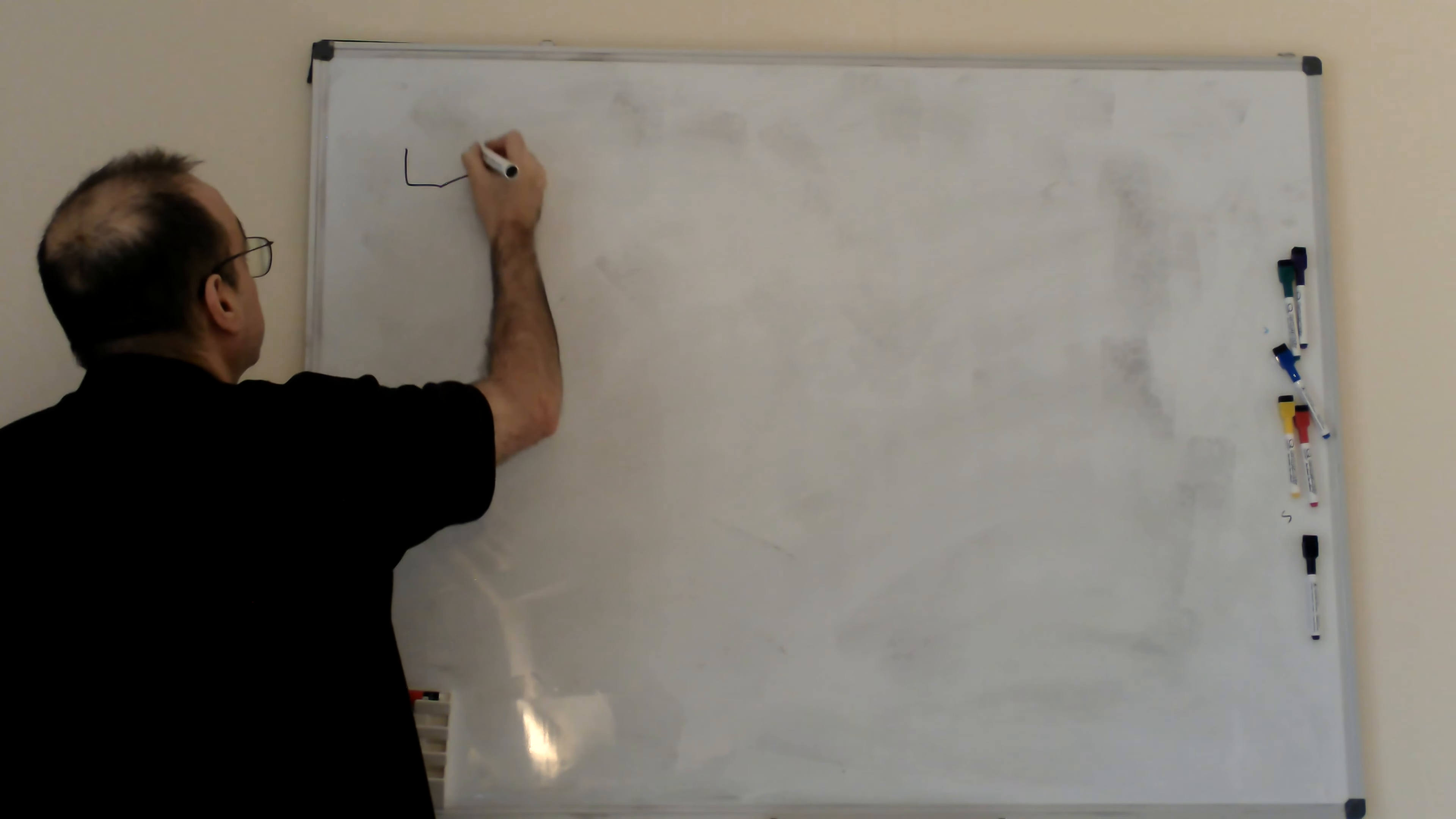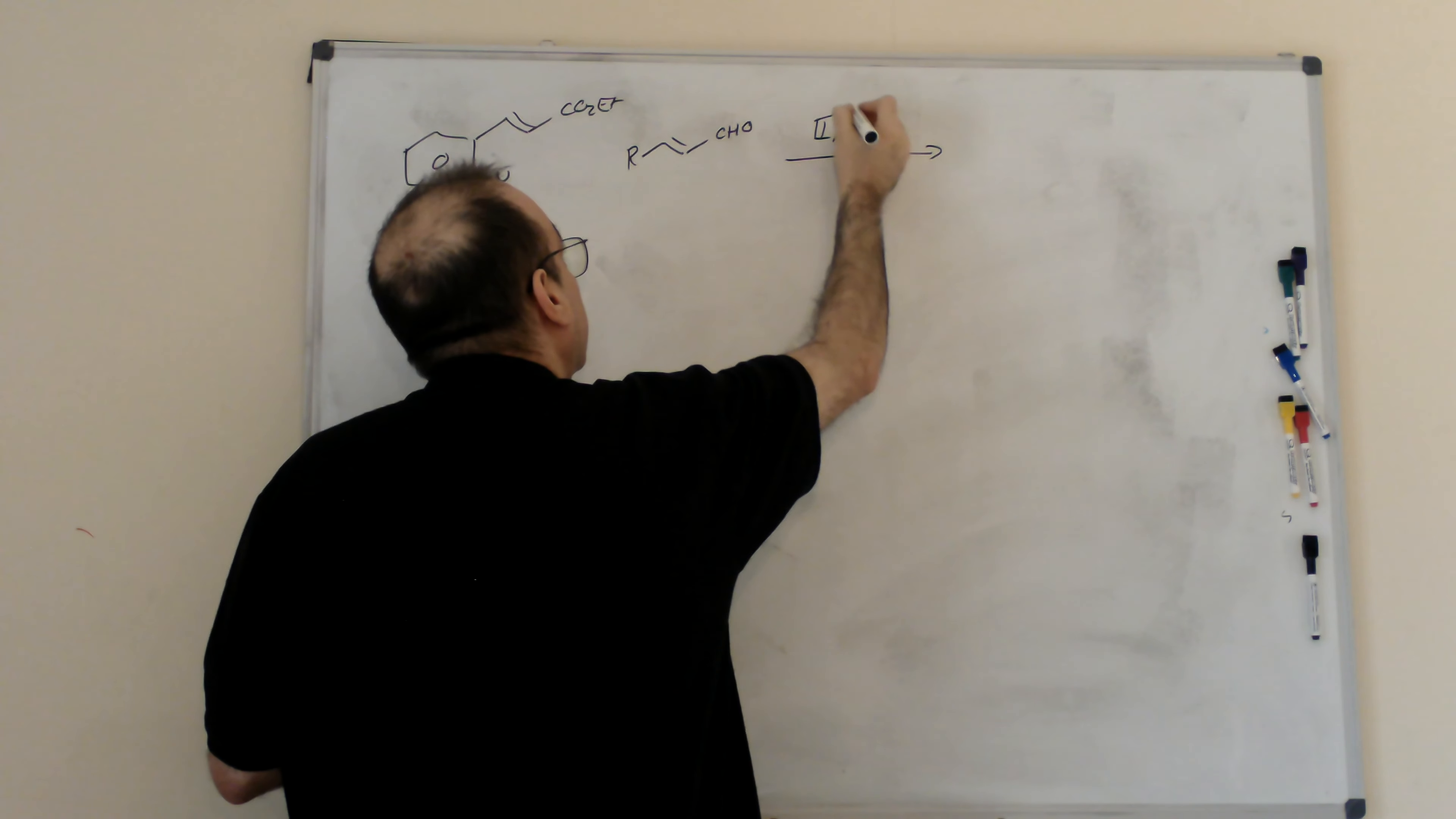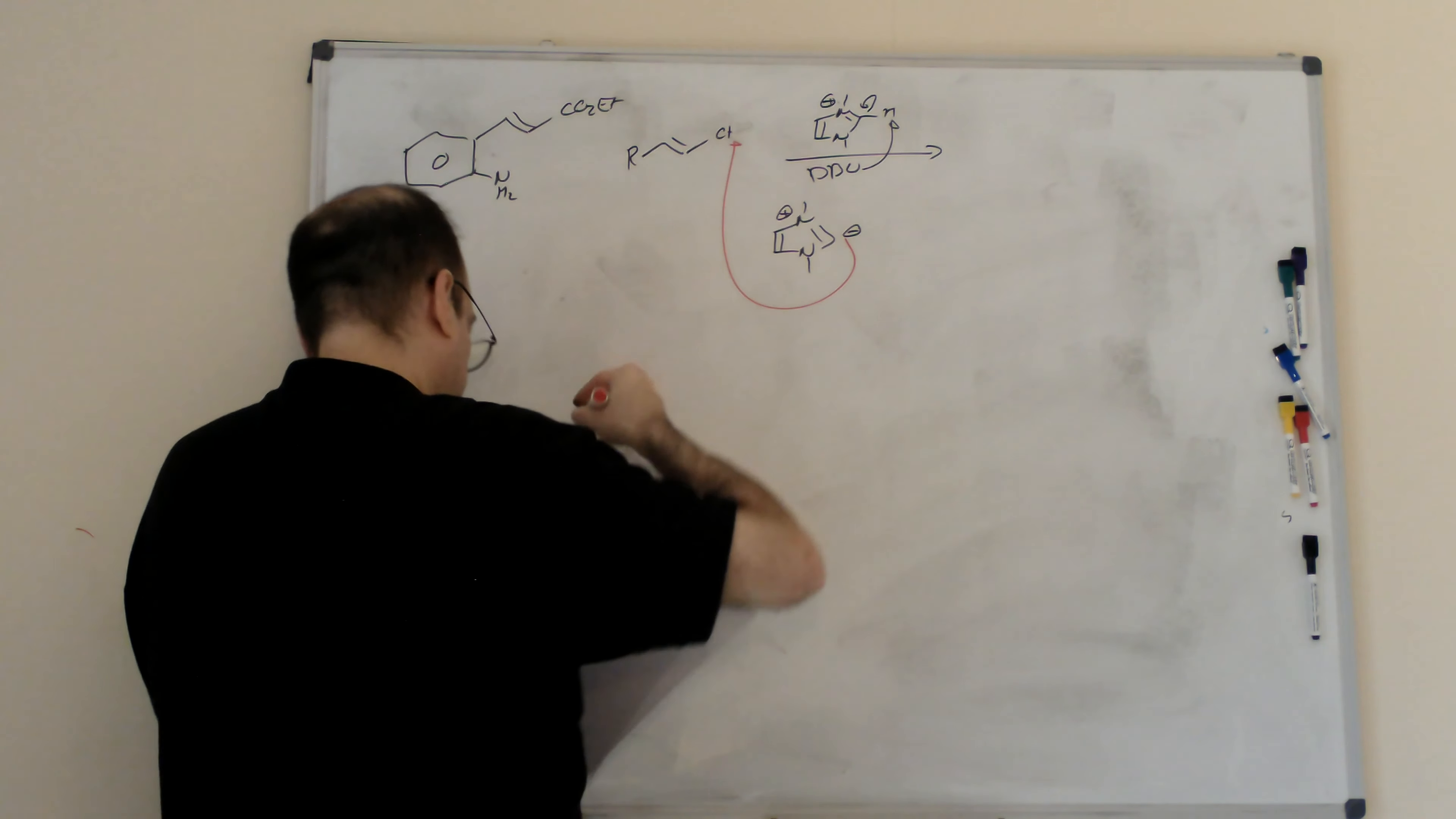You have this soft material. And we add an alpha-beta unsaturated aldehyde and a carbene precursor with a base that is DBU. Well, what is happening, always the same. First step, we have to generate the carbene. That means the DBU takes the proton and we generate the carbene that will attack the aldehyde.